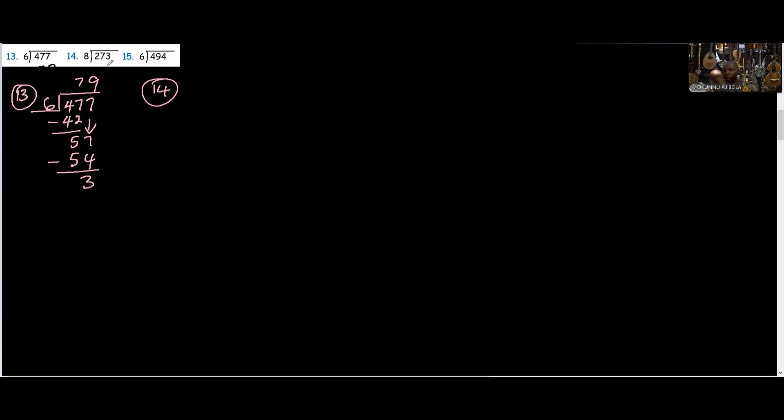That is 2, 7, 3. That is 273. Divide by 8. 8 can go in 2. So 8 to 27 is 3. 3 times 8 is 24. You subtract, you have 3. And you drop down the next figure, which is 3. So 8 to 33 is 4. 4 times 8 is 32. Then you have 1 as the remainder. Is that clear? Yeah.